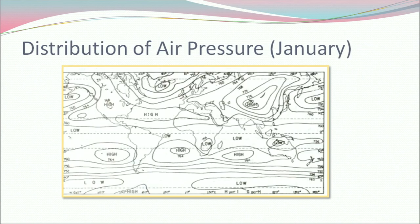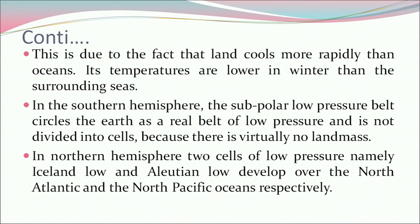Looking at the distribution of air pressure in January: land cools more rapidly than oceans, so temperatures are lower in winter than the surrounding seas. In the southern hemisphere, the subpolar low pressure belt circles the earth as a real belt of low pressure and is not divided into cells because there is virtually no land mass. In the northern hemisphere, two cells of low pressure — the Iceland low and Aleutian low — develop over the North Atlantic and North Pacific oceans respectively.